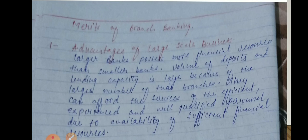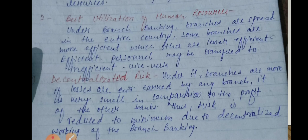Because of the large number of their branches, wherever the bank's branch is found, people deposit their money there and also withdraw loans and amounts. They can afford very efficient, experienced, and well-qualified personnel. Due to the availability of sufficient financial resources, they appoint qualified, experienced, and efficient persons at their branches.